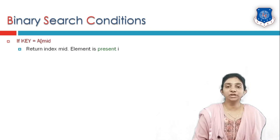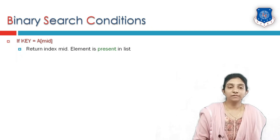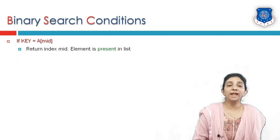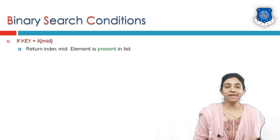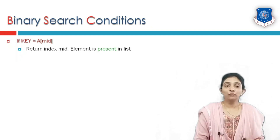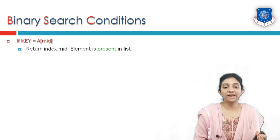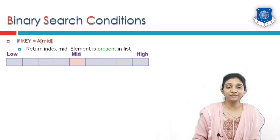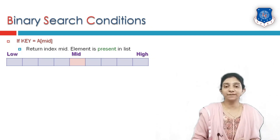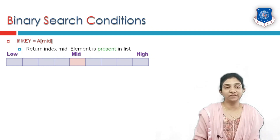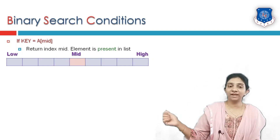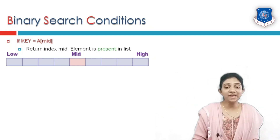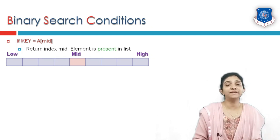What are the binary search conditions? There are mainly three conditions. The first condition is that if the key value is equal to the element at the mid index, and the key matches the mid element of the array, we say the element is present or found in the list, and its index must be returned by the algorithm. The starting index is low, the last element index is high, and mid is calculated as (low + high) / 2. If the element at mid matches the key, we return that index to indicate the element is found.